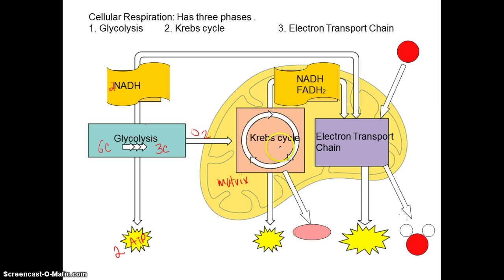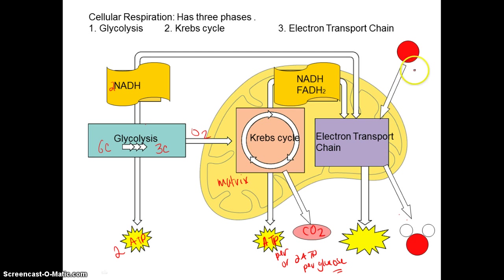The matrix of the mitochondria is where the Krebs cycle takes place. The Krebs cycle will break down that glucose molecule, releasing it as carbon dioxide, and producing one ATP per cycle — or two ATPs per glucose molecule. But you produce a lot of NADH and FADH, which will go to the electron transfer chain, where oxygen pulls those electrons, and when oxygen accepts them, it becomes water, forming a lot of ATP — about 32 ATPs.